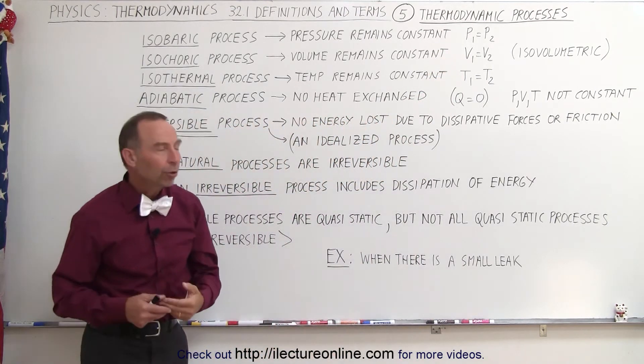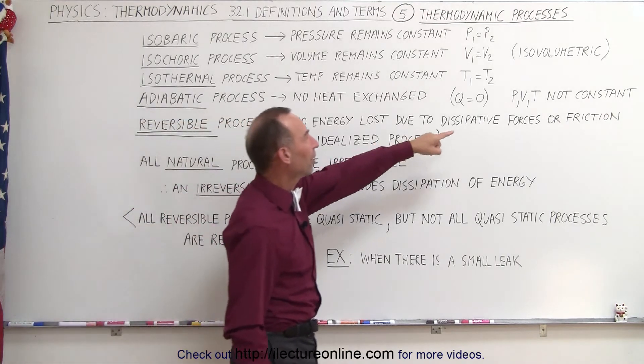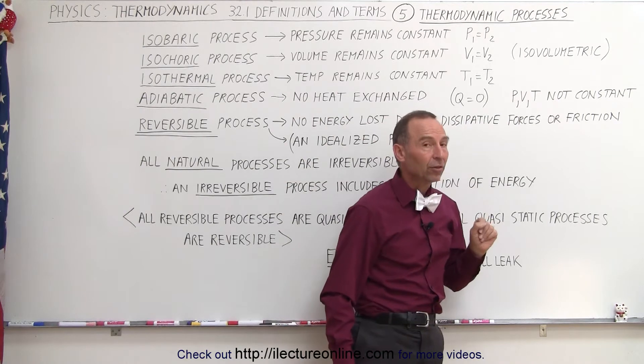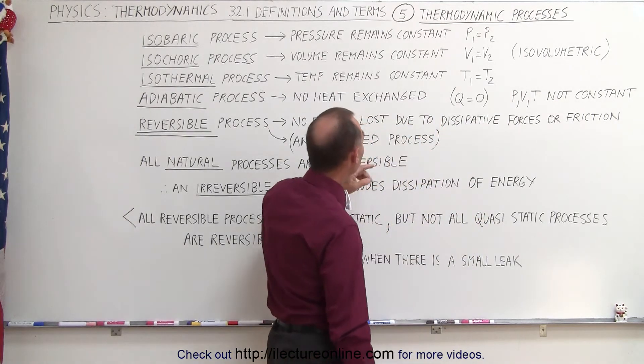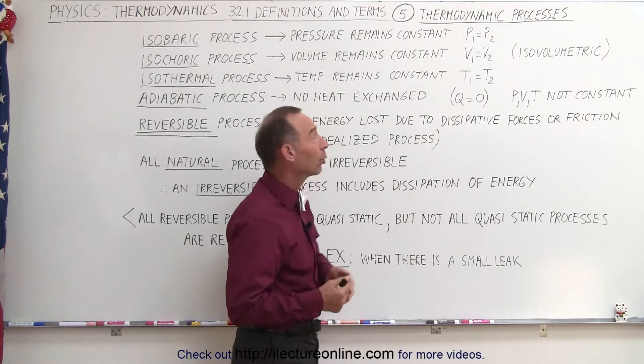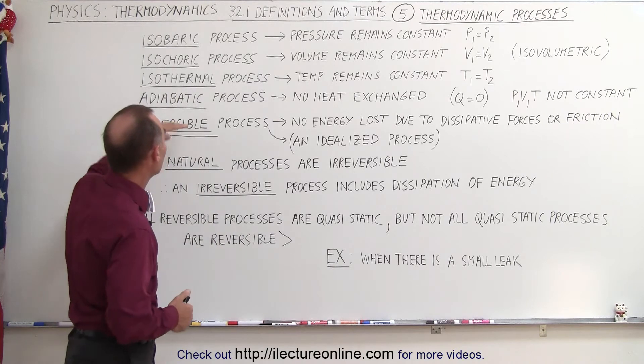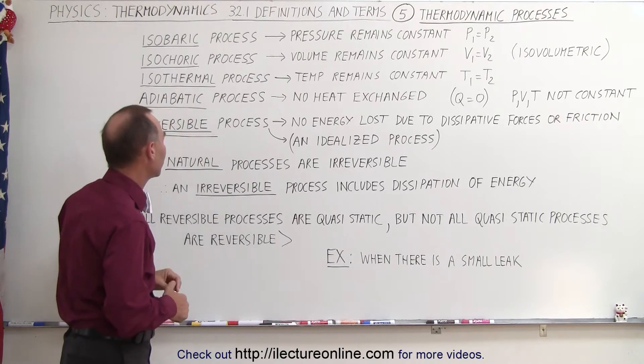Then we have a fourth process called the adiabatic process. In that process, none of the variables p, v, or t remain constant. But what is different here is that no heat is exchanged. Like if you have an adiabatic wall, q equals zero means that there's no heat being exchanged, and so we know that as being the adiabatic process.